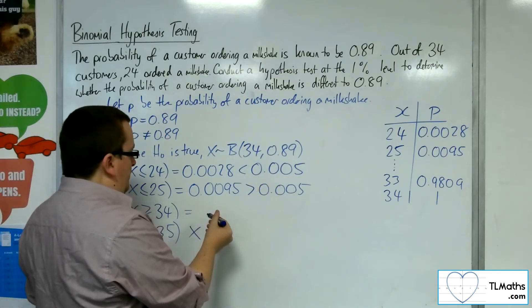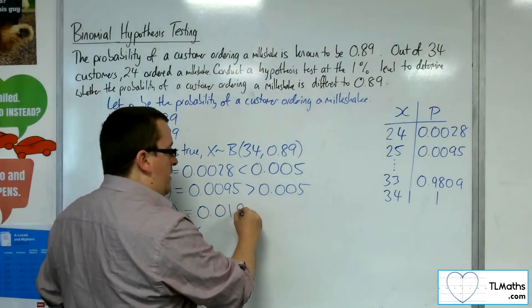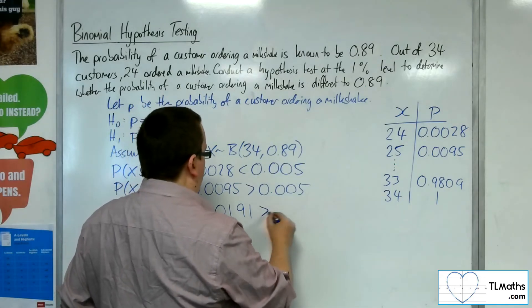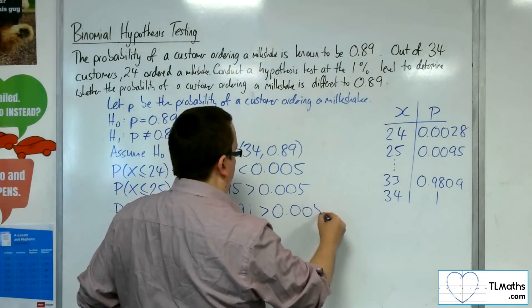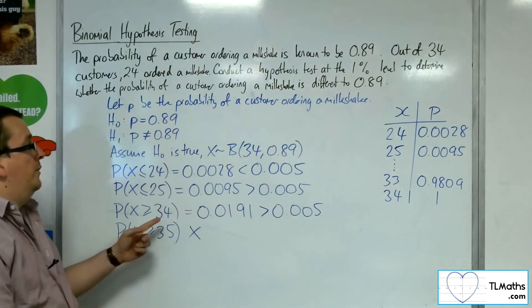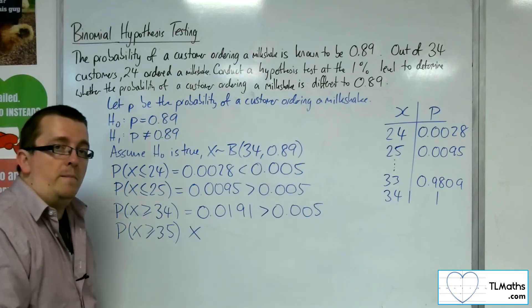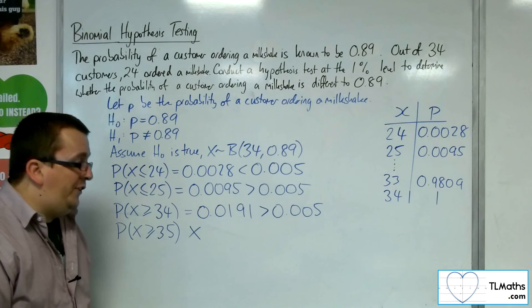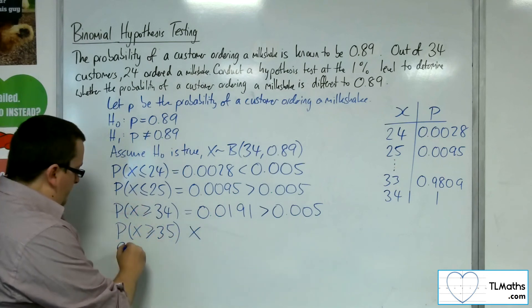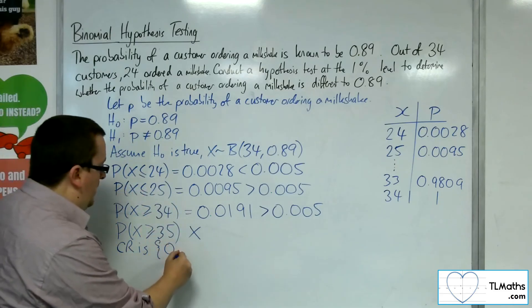Greater than or equal to 34 is 1 takeaway less than or equal to 33, so that's 0.0191, which is greater than 0.005. And so even if you've got 34 customers out of 34 ordering a milkshake, that would still not be significant. So the critical region here is actually just from 0 up to 24.